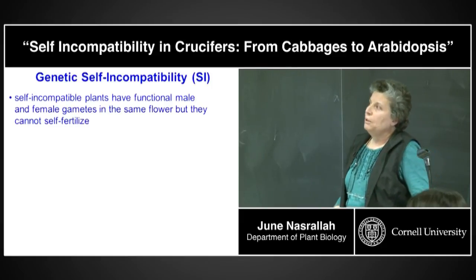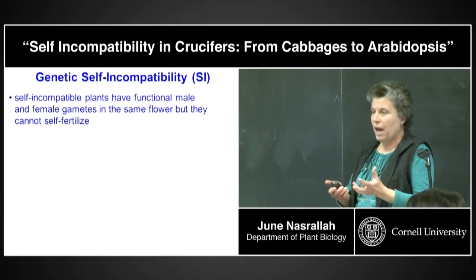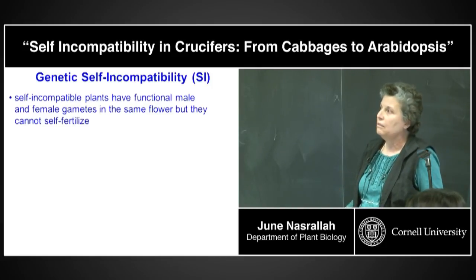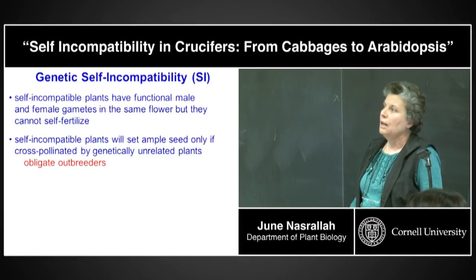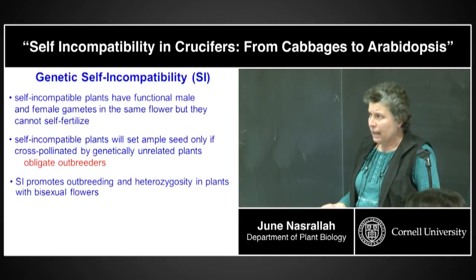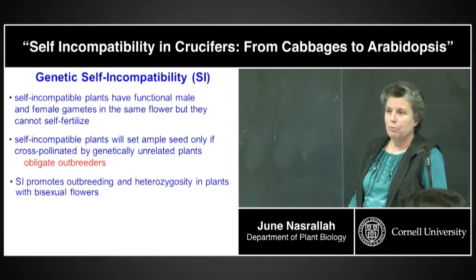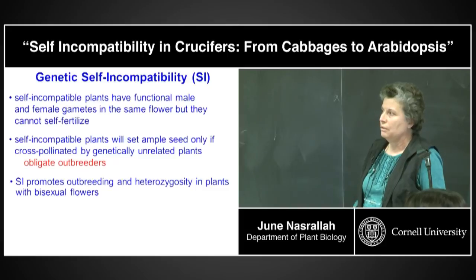Self-incompatible plants have functional male and female gametes together in the same flower, but they cannot self-fertilize. They will set a lot of seed only if cross-pollinated by genetically unrelated plants, so they're obligate outbreeders. Self-incompatibility is a mechanism that promotes outbreeding and heterozygosity in plants that have perfect flowers, in which both female and male structures are in close proximity.